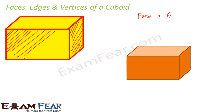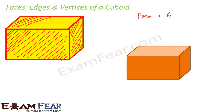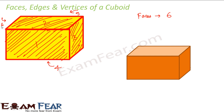When you look at this cuboid from the front view, you will not be able to see all six faces. How many faces are visible to you? Only three faces — the top face, the front face and one of the side faces. So only three faces are visible. There is a fourth face at the bottom, a fifth face at the back, and a sixth face on the other side of face three. So these are the six faces.